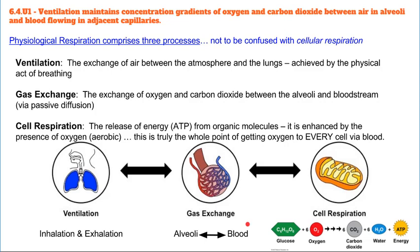The constant fluctuation of inhalation and exhalation in the ventilation process is what drives that concentration gradient to continue. Without ventilation, the gradient would become stagnant and even out. It's important not to confuse physiological respiration — which comprises these three processes — with cell respiration. Cell respiration is what's happening in every single one of our cells; it's what oxygen is required for. Cell respiration releases energy in the form of ATP, and it occurs in the mitochondria and cytoplasm of cells. Oxygen is used in that process, and carbon dioxide is the byproduct.